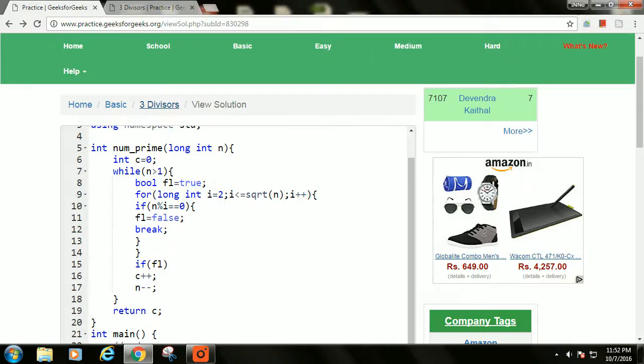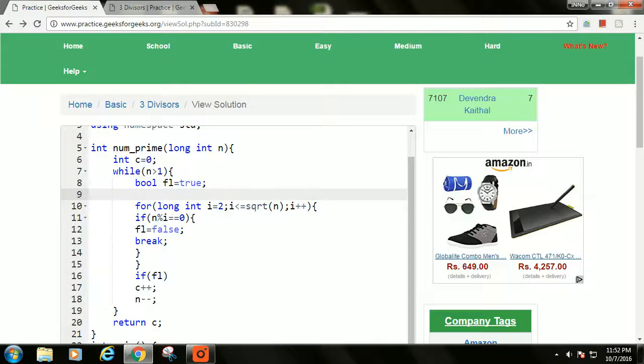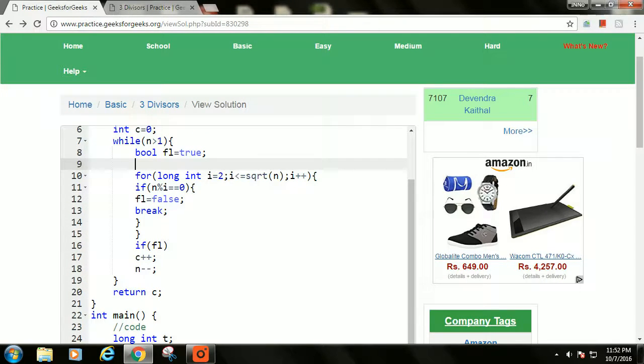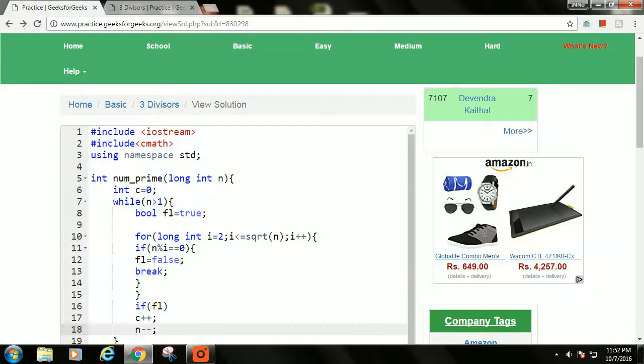What we are doing here is going from 2 to square root of n. It is just a basic algorithm of finding a prime number. If the number is prime, we are increasing c plus plus, and at last we are returning c.